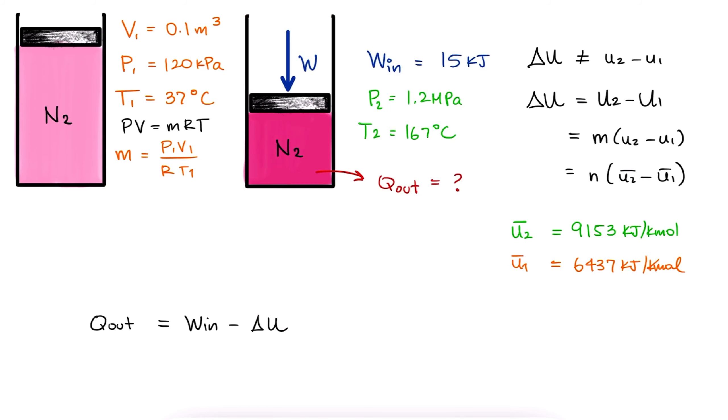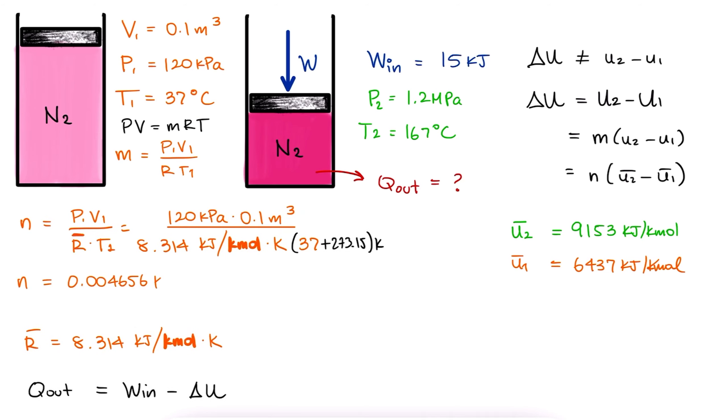Therefore, what we want to use in this case is R-bar, the universal gas constant. With this, we find the number of moles in kilomoles of nitrogen we have in our system. And done!